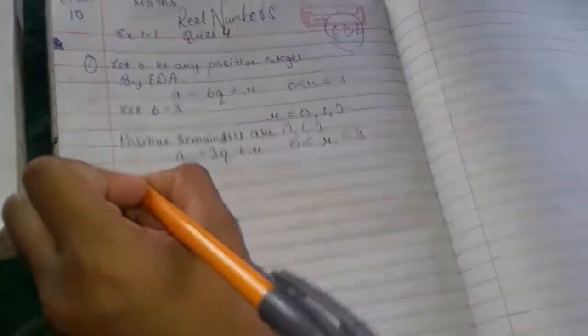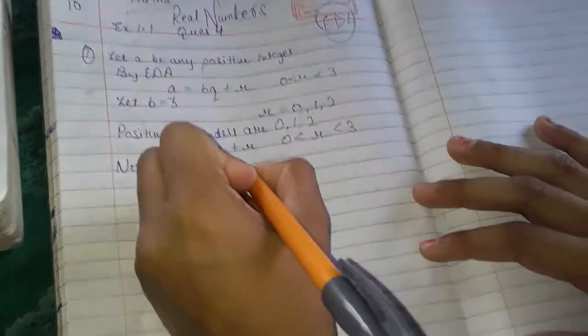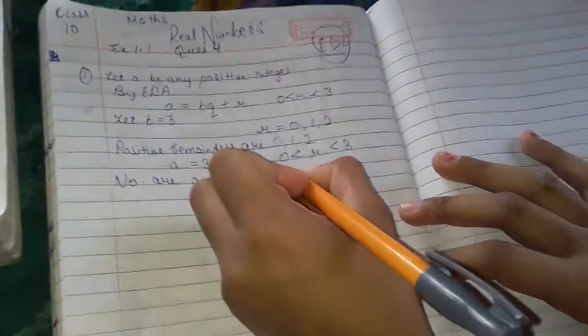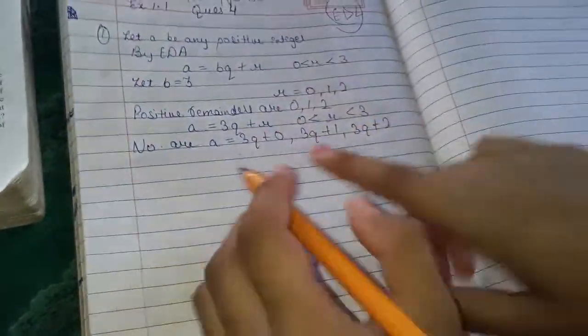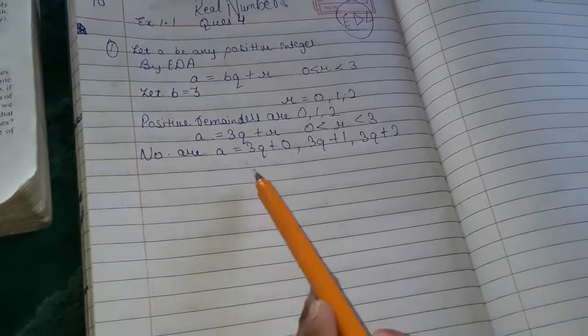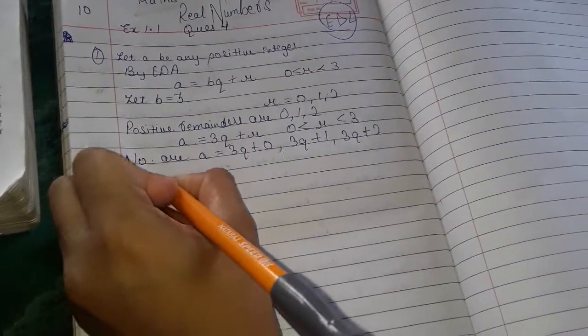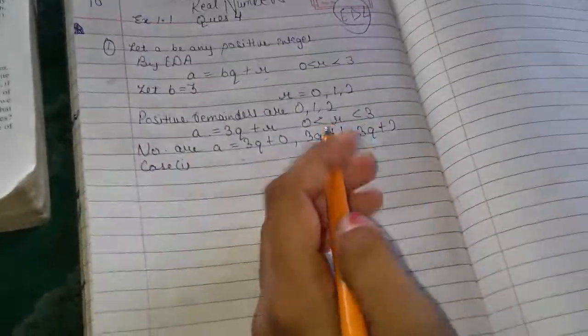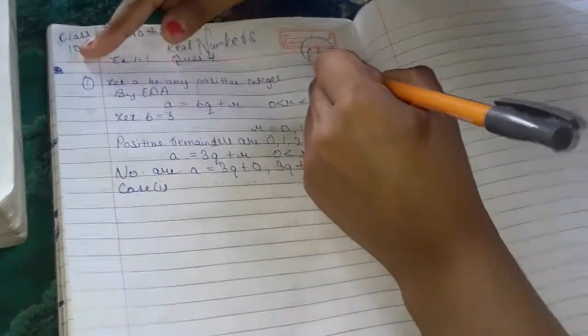So the numbers are A equals 3Q plus 0, 3Q plus 1, and 3Q plus 2. We can write these as 3Q, 3Q plus 1, and 3Q plus 2. Now we'll solve case by case. Case 1 is 3M, and case 2 is 3M plus 1.